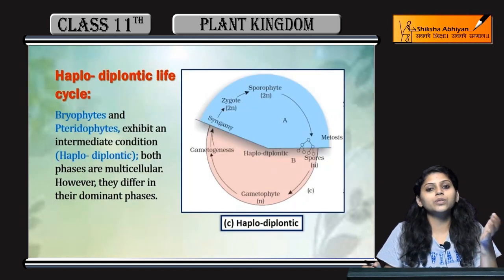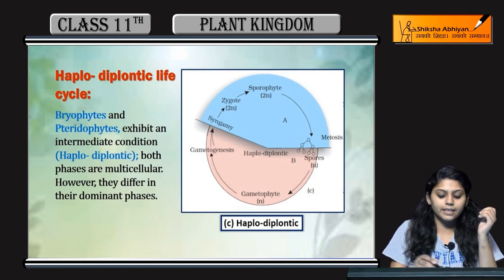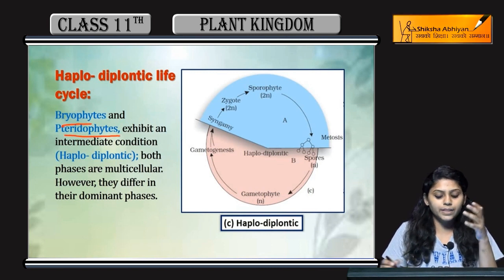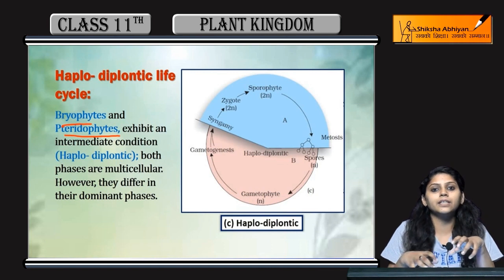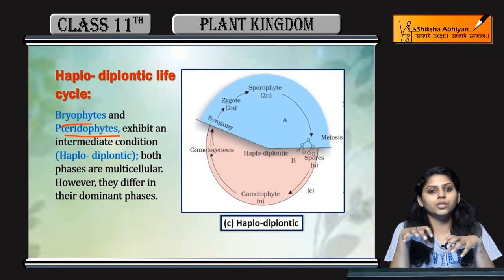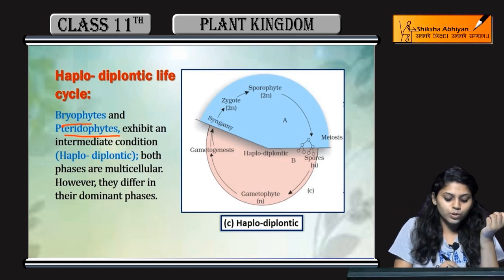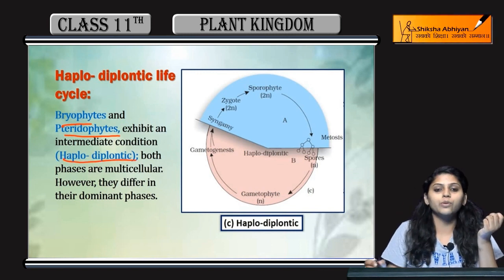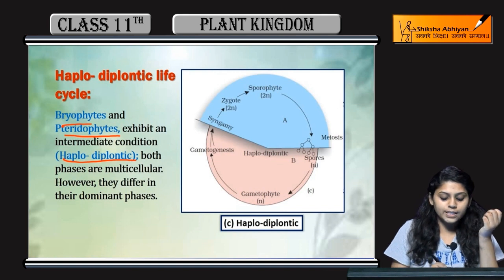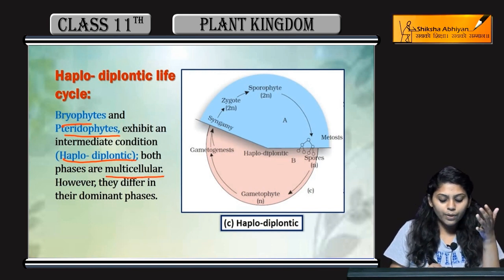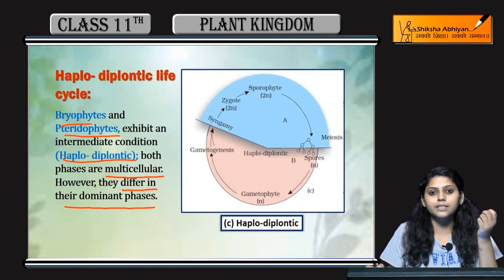Now coming to the haplodiplontic life cycle. Bryophytes and pteridophytes exhibit an intermediate condition in which both the diploid and haploid stages are present in equal amounts — this is called haplodiplontic. Both phases are multicellular; however, they differ in their dominant phases.